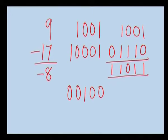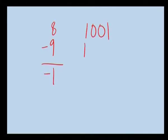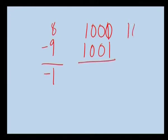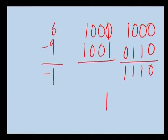Let us take one more example to understand this better: 8 minus 9 gives minus 1. The binary of 8 is 1000 and of 9 is 1001. Taking the minuend 1000 as is and adding the 1's complement of 1001, which is 0110, we get 1110 with no carry. This means the result is negative. The 1's complement of 1110 is 0001 with a negative sign, which is actually 1. This is how 1's complement subtractions are carried out.